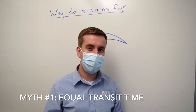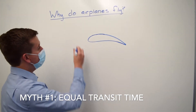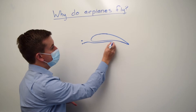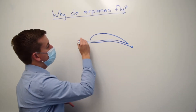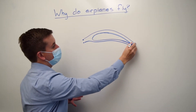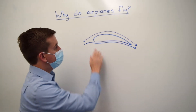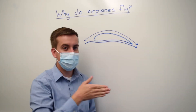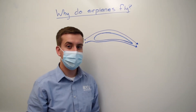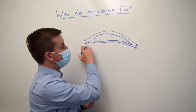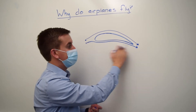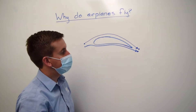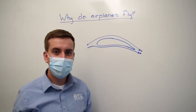The first one is called the Equal Transit Time Theory. This says you have two air molecules coming in together — one goes over the bottom of the airfoil, and one goes over the top. If you're unfamiliar with an airfoil, it's a curved, sideways teardrop shape — if you were to take a wing and cut it down the side, this is what it looks like. The Equal Transit Time Theory says both molecules take the exact same amount of time to reach the trailing edge of the airfoil. In order to do that, the one on top has to travel further, so it has to travel faster.